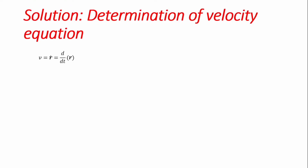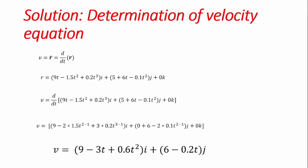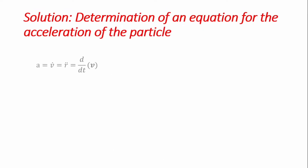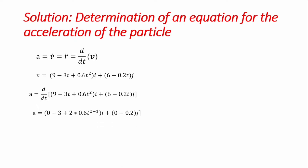Once r is obtained, we progress to determine the velocity equation. Velocity is the time derivative of the position vector, so v = dr/dt. We differentiate the position equation with respect to time to get a simple velocity equation. Then the next step is to determine the acceleration equation, which is the derivative of velocity: a = dv/dt. Differentiating the velocity equation with respect to time gives us our acceleration equation.